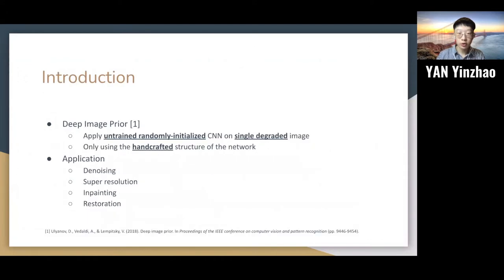We have continued the work of the Deep Image Prior. For the Deep Image Prior, it applies untrained, randomly initialized CNN on single degraded image. It only uses the handcrafted structure of the network. It has four applications, which includes image denoising, image super-resolution, image inpainting, and image restoration.